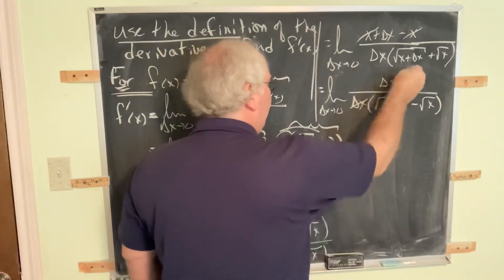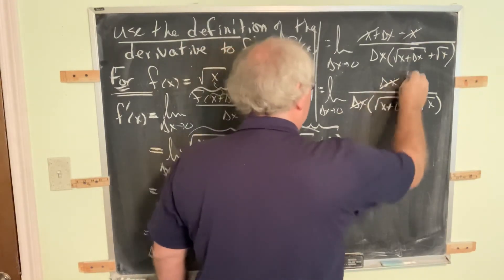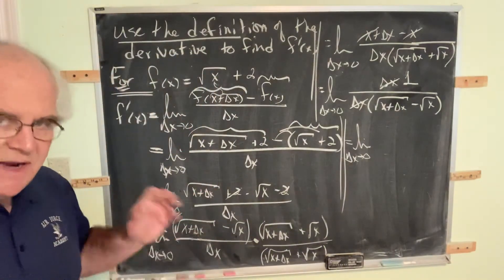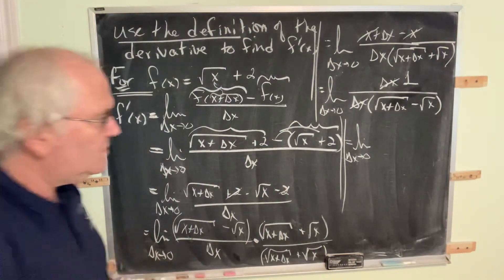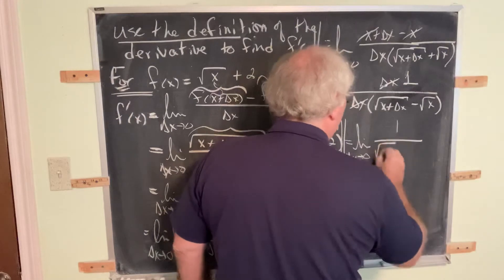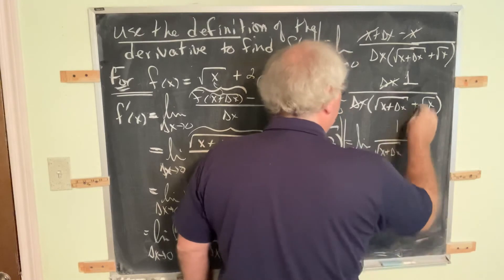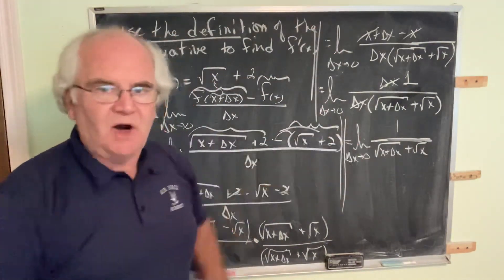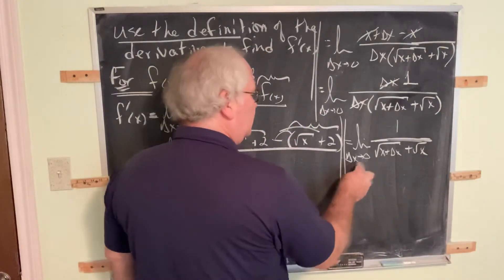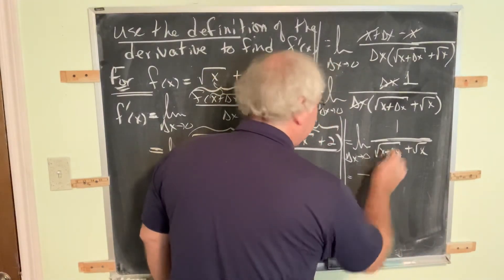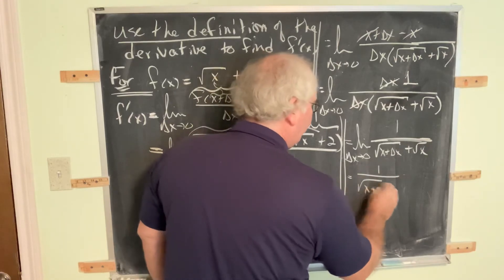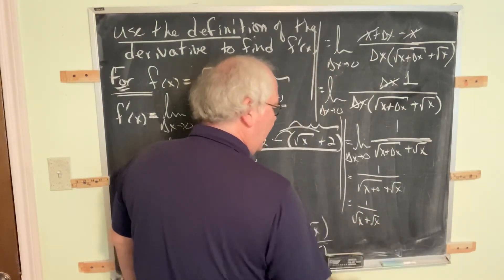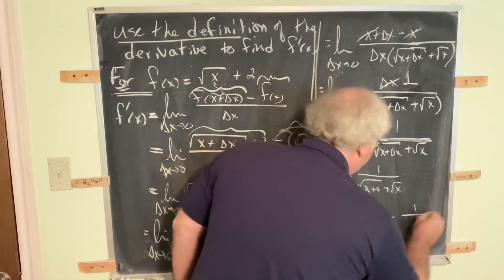Cancel delta x with delta x. Remember, when everything from the numerator vacates, we always leave a 1. So this is equal to the limit as delta x goes to 0. Every individual step is straightforward — keep your wits about you. This is now 1 over the square root of x plus delta x plus the square root of x. Direct substitution: this is 1 over the square root of x plus 0, plus the square root of x, which is 1 over the square root of x plus square root of x. And a plus a is 2a, so this is 1 over 2 square root of x.